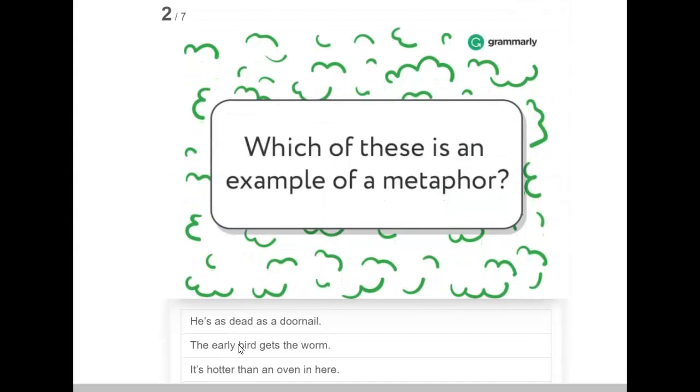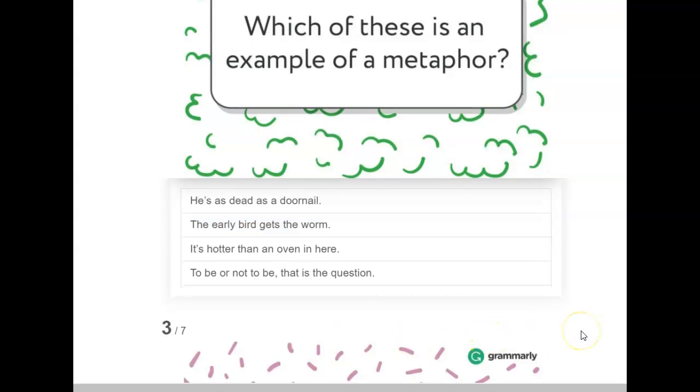Let's try this one. Which of these is an example of a metaphor? He's as dead as a doornail. The early bird gets the worm. It's hotter than an oven in here. To be or not to be? That is the question.